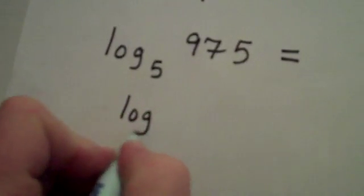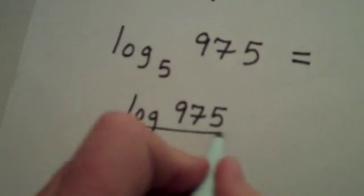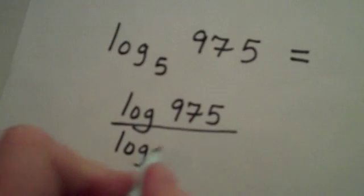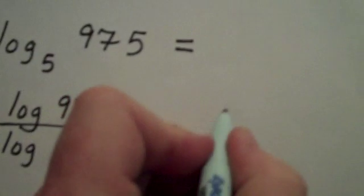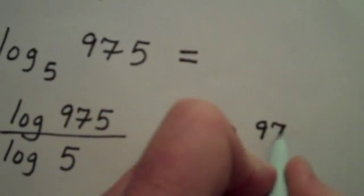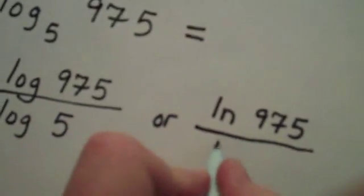If I have the log base 5 of 975, I can write that in one of two ways. First, I can use the log function and write it as the common log of 975 divided by the common log of 5. Or, I can apply the natural log function and write it as the natural log of 975 divided by the natural log of 5.